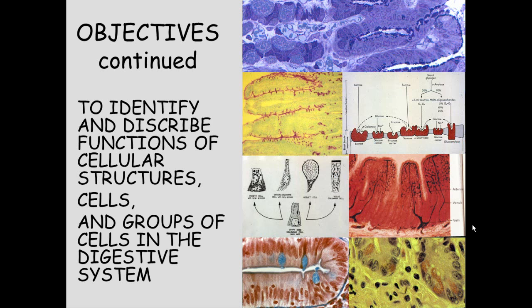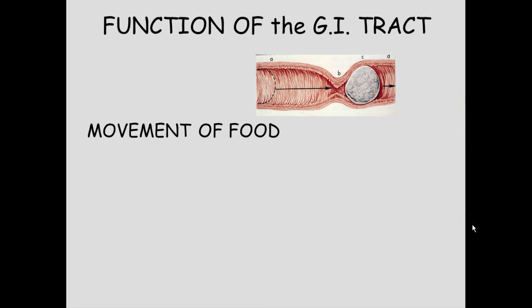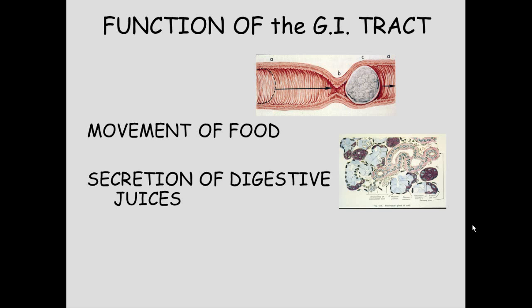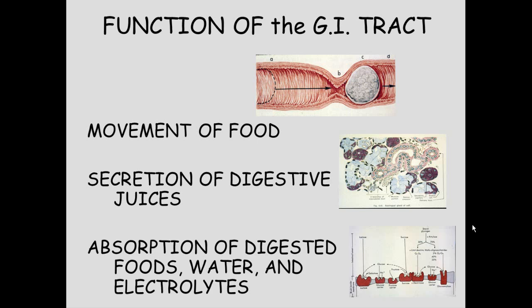The digestive system has three basic functions. First is to move food from one location to another, so we expect to find smooth muscle in the digestive tract to facilitate that. Second is secretion of digestive juices, starting with the salivary gland and going all the way to the colon.